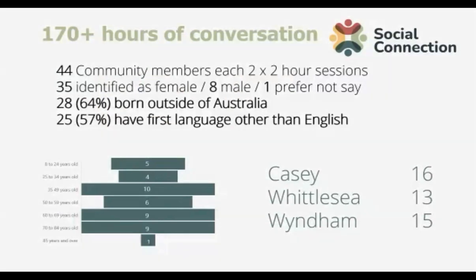The result was 170-plus hours of conversation with 44 community members. Thirty-five identified as female, 8 as male, and one preferred not to say. Sixty-four were born outside of Australia and 57 have a first language other than English. There was quite a range of ages, and we did particularly well to get people in that hard-to-reach working-age group.